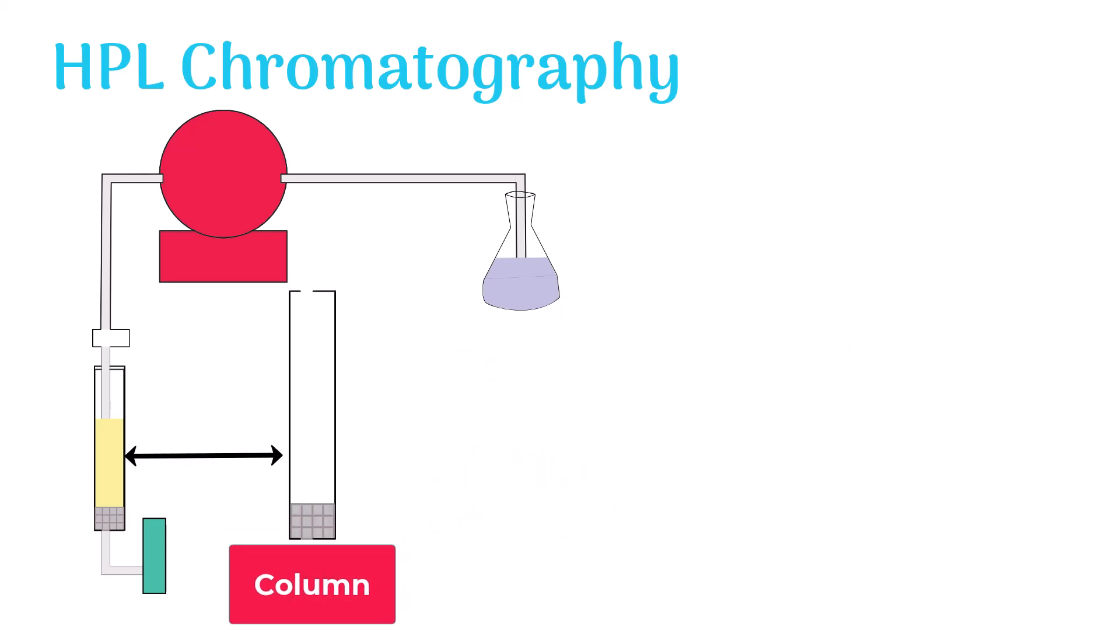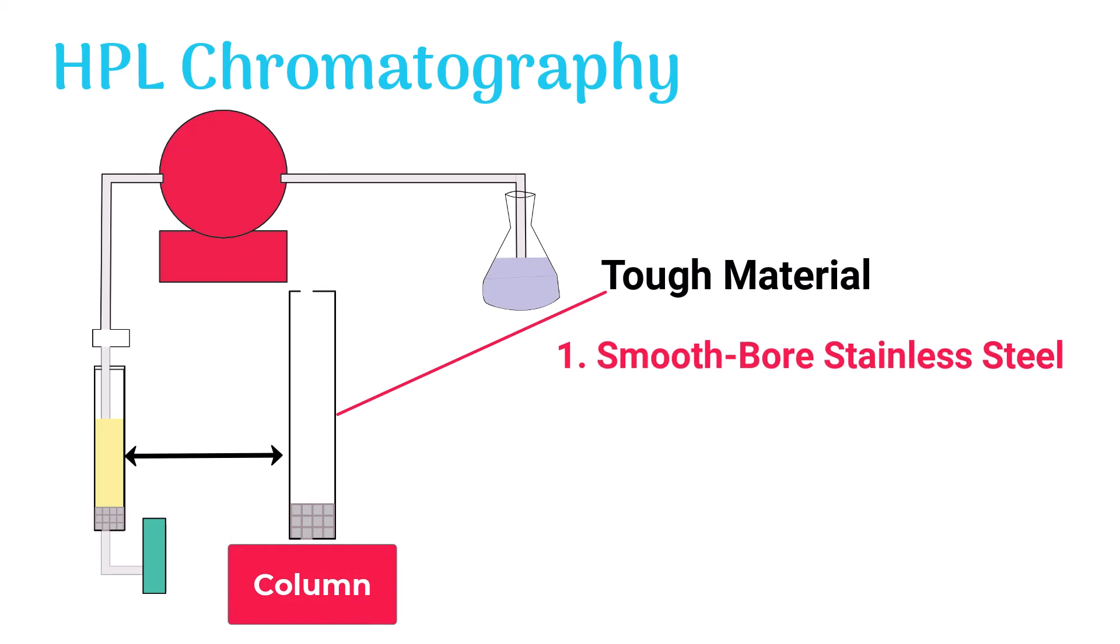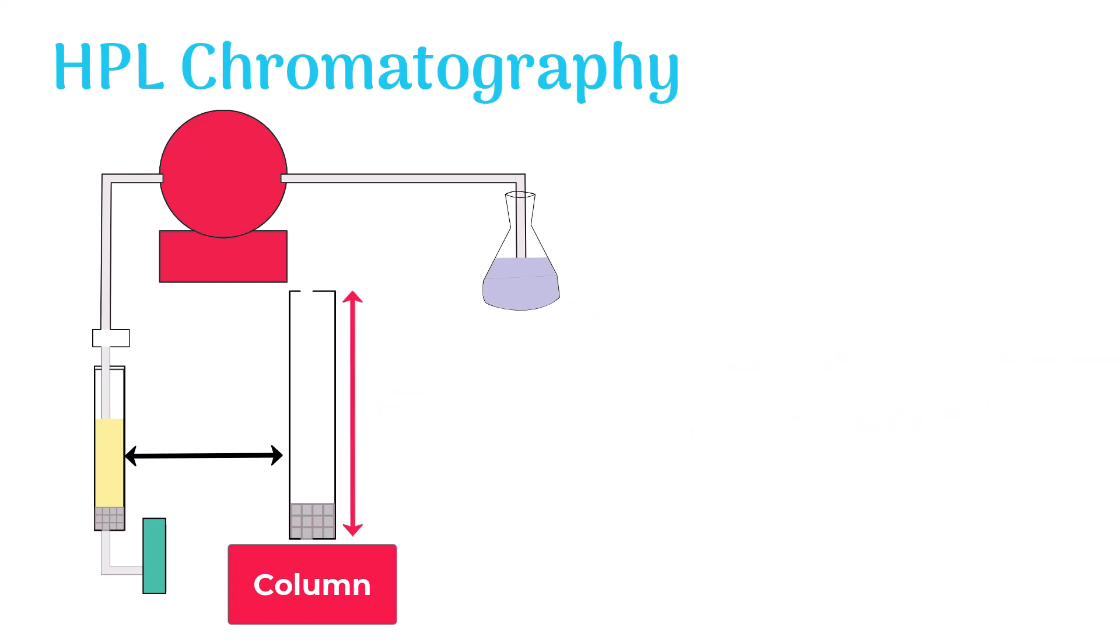The column is always made of tough material which can withstand high pressure. It is mainly made up of smooth-poured stainless steel or heavy walled glass tube. Length of the column varies from 5 cm up to over 20 cm and diameter of the column is mostly 4.5 mm.